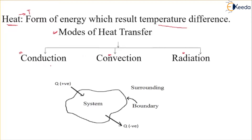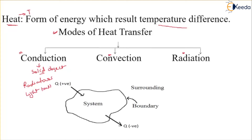The first mode is conduction. Conduction occurs when two solid bodies are in direct contact, and we consider heat transfer between solid objects. When two bodies are in direct contact, heat transfer between them is represented by conduction. For example, heat transferring from a hot burner on the stove into a pan when boiling water is conduction. In technical terms, radiators, heat exchangers, and light bulbs are examples of conduction.